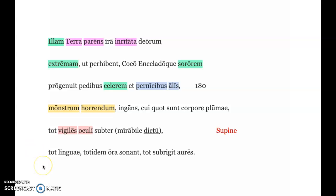And then he describes how for every feather there is on her body, beneath it there's an eye and there's a mouth and there's a tongue and there's an ear. So Rumor is very scary and very unique. So that's the second part of the passage.